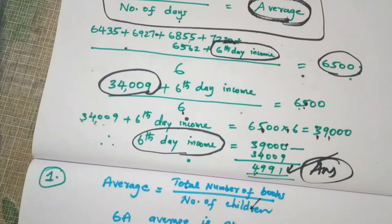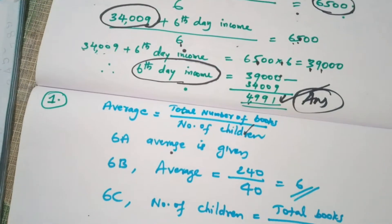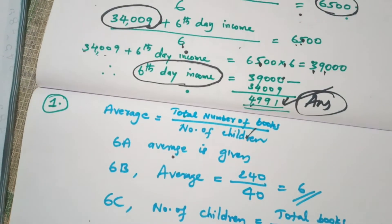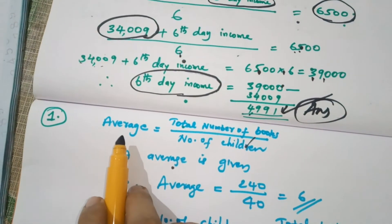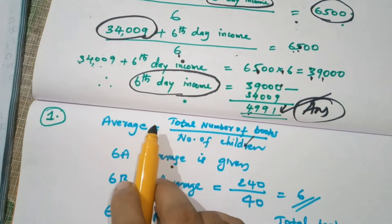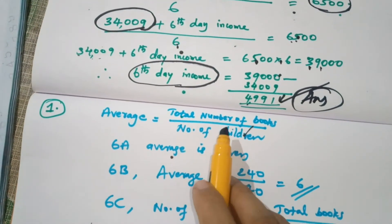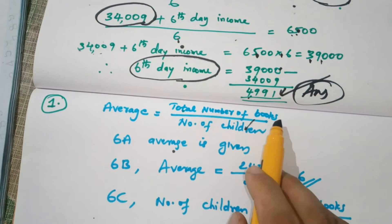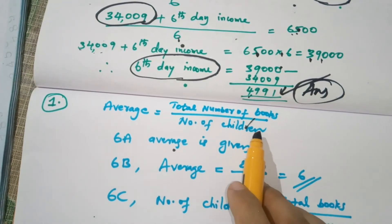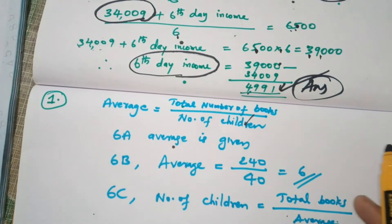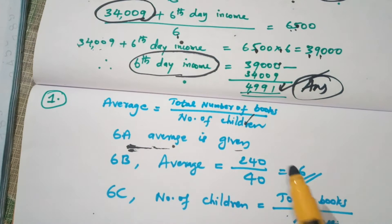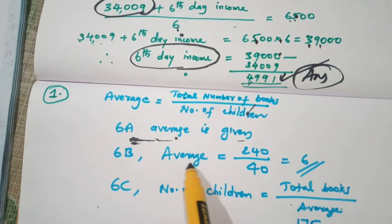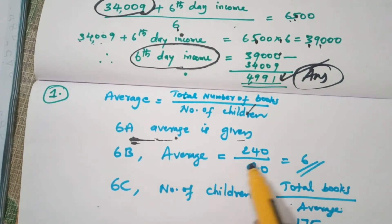Let's look at this and start. The average — we can divide the number of books by the number of children to get the average. RA is the average.